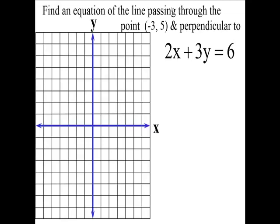Find an equation of the line passing through the point negative 3, 5, and it's perpendicular to this line.